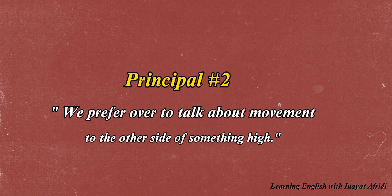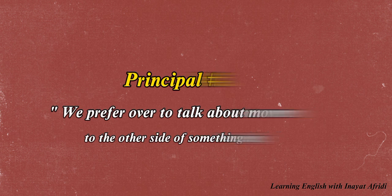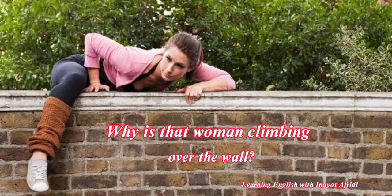Moving to principle number two: we prefer 'over' to talk about a movement to the other side of something high. The example sentence is: 'Why is that woman climbing over the wall?' If you write it as 'Why is that woman climbing across the wall?' — that is grammatically wrong.